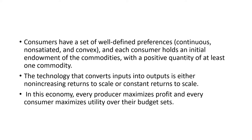Consumers have a set of well-defined preferences, and these preferences are continuous, non-satiated, and convex. These are the three important properties of consumer preferences in this model. Each consumer holds an initial endowment of commodities with a positive quantity of at least one commodity, meaning they are making some kind of preferences in the market and consuming at least a positive quantity of a single commodity.